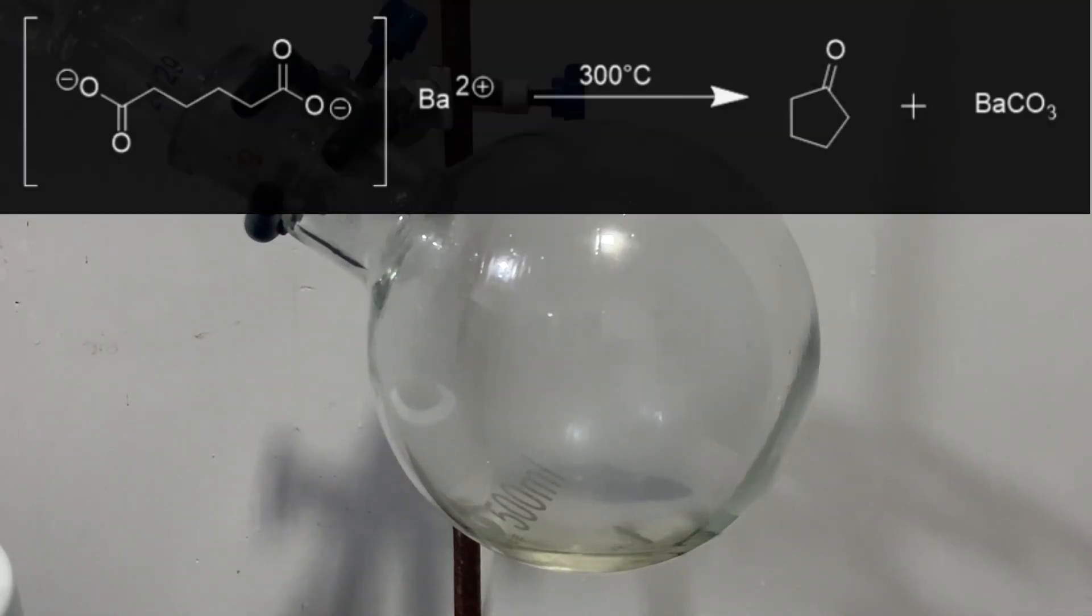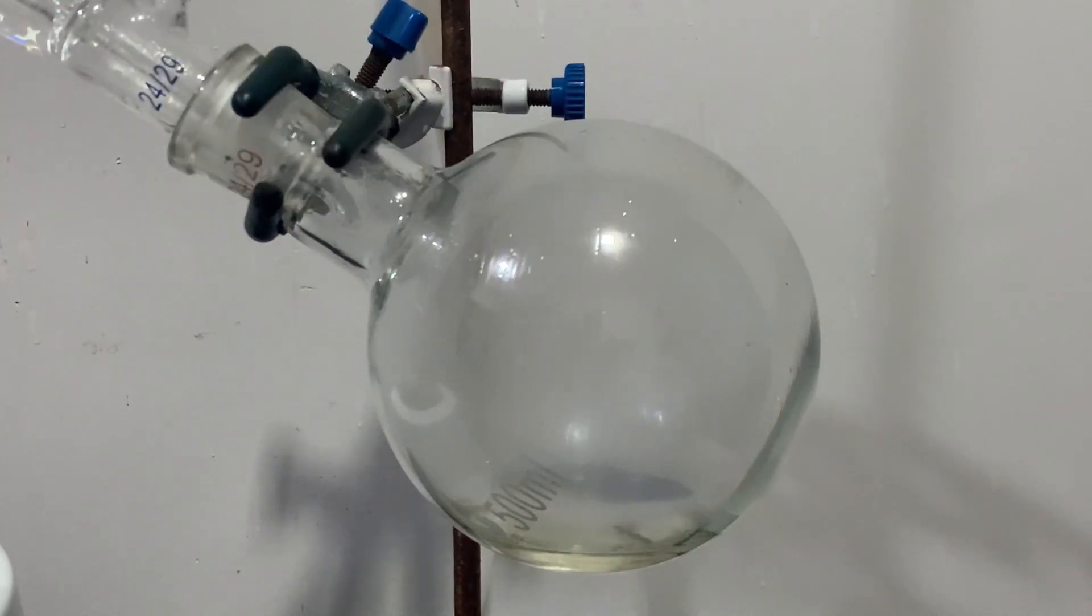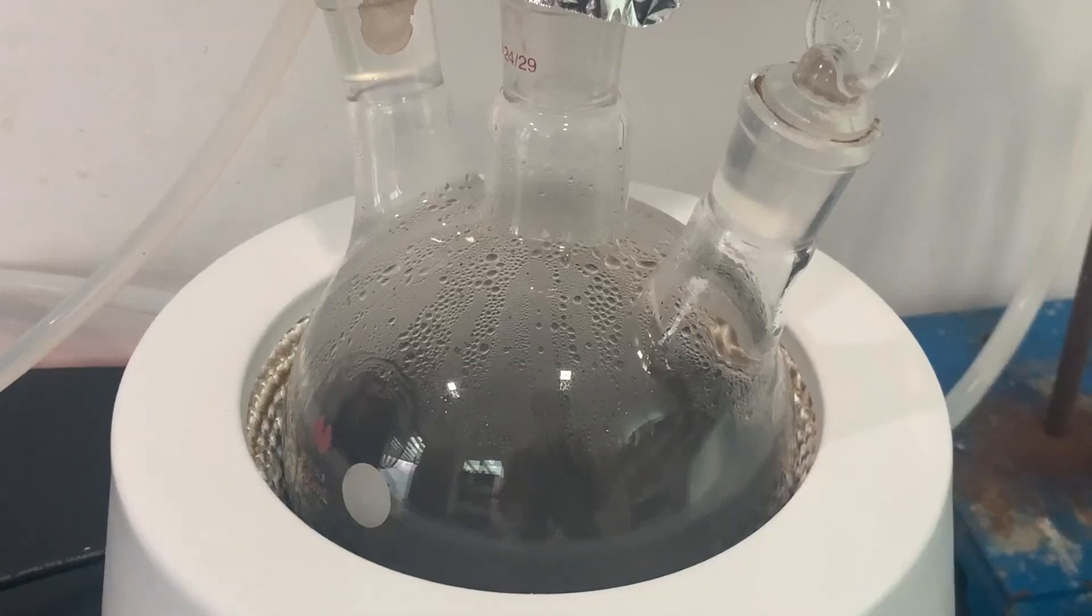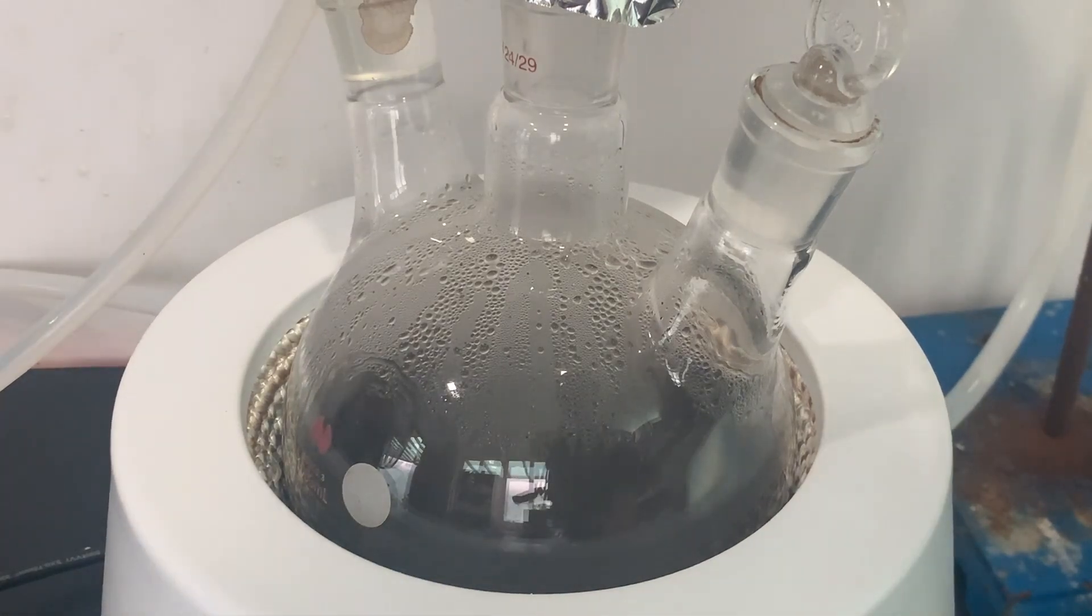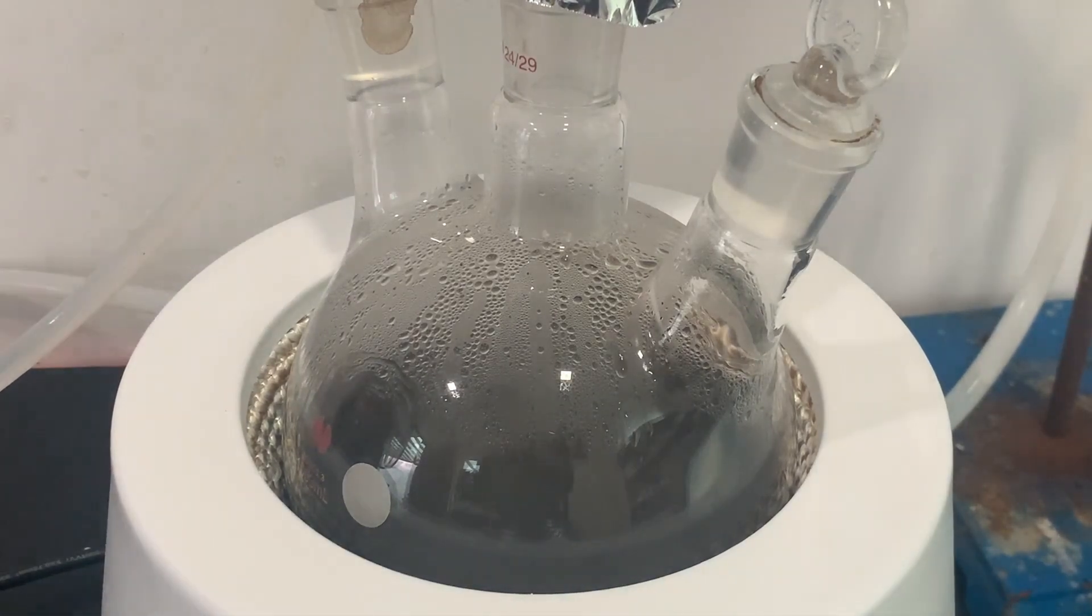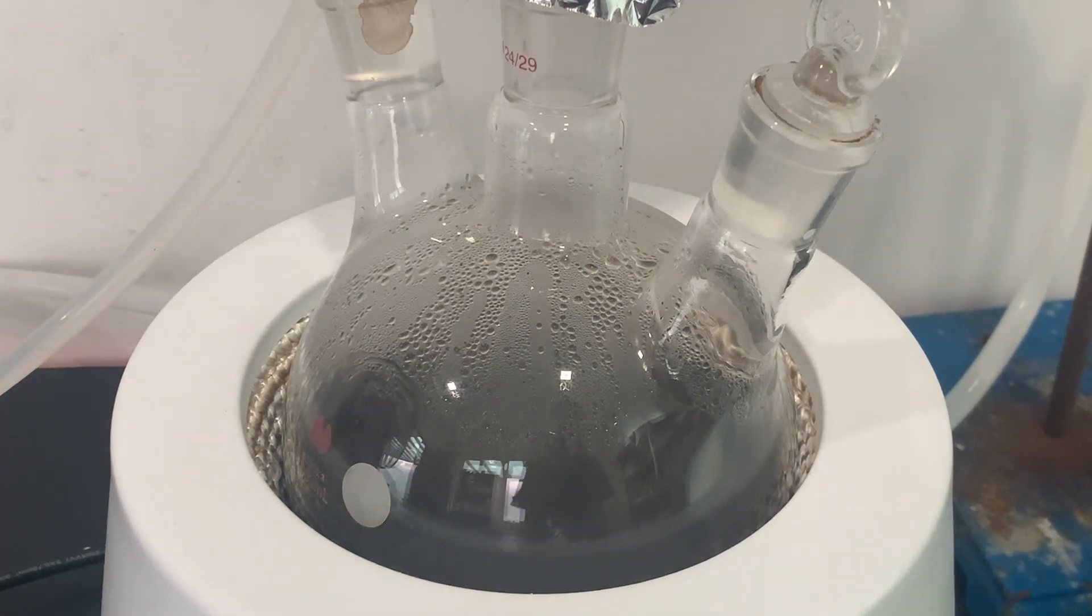The cyclopentanone boils off and is collected in the receiving flask while the barium carbonate stays in the one liter flask. Once there is little to no adipic acid left in the flask, heating was turned off and everything was allowed to cool back down to room temperature.